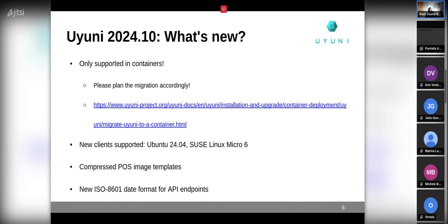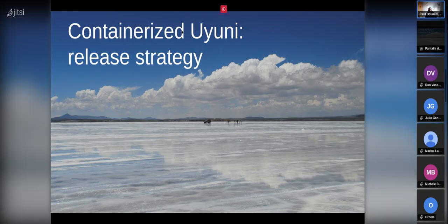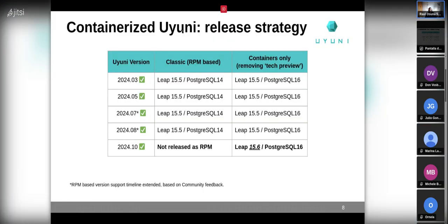Regarding what is new in last week's release: there is finally support for Ubuntu 24.04 — months later we finally managed to release that — and also for SUSE Linux Micro 6. Apart from that, there are compressed POS image templates and a new ISO 8601 date format for API endpoints. Those were the most important points. Regarding the container-based Uyuni release strategy: everything is done. It wasn't in the 24.09 release as originally expected because the release was postponed, and it finally shipped in October as 24.10, released as containers only.